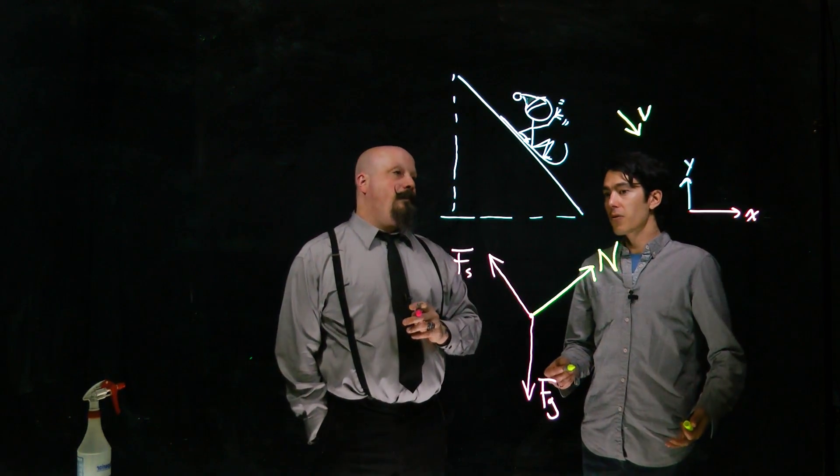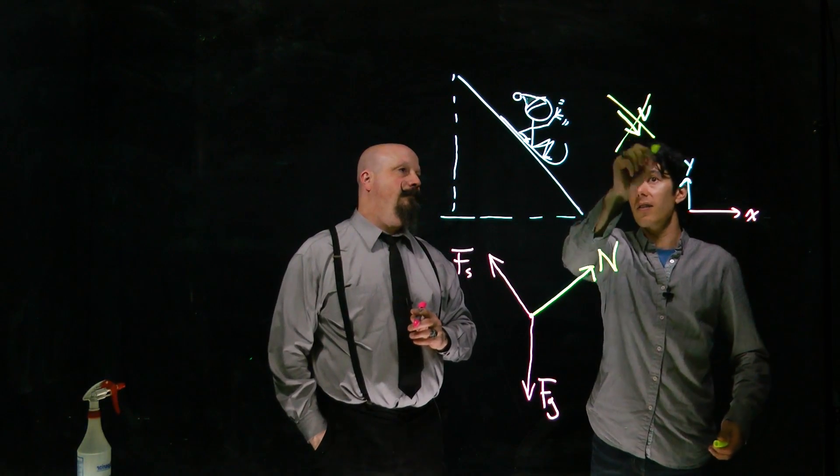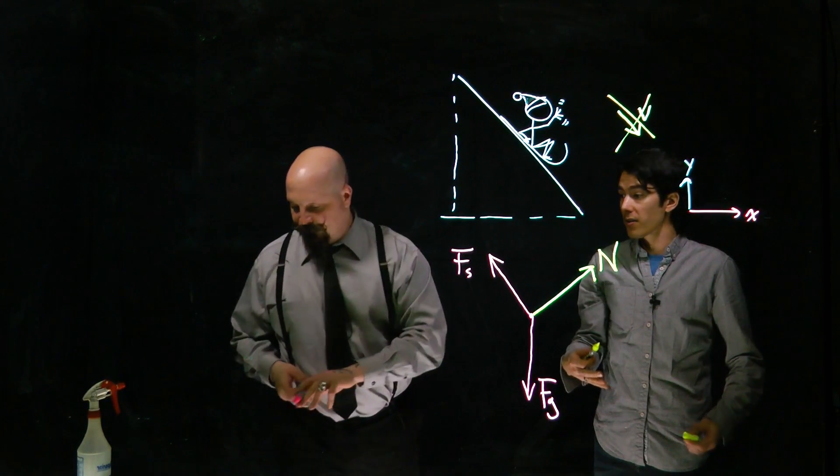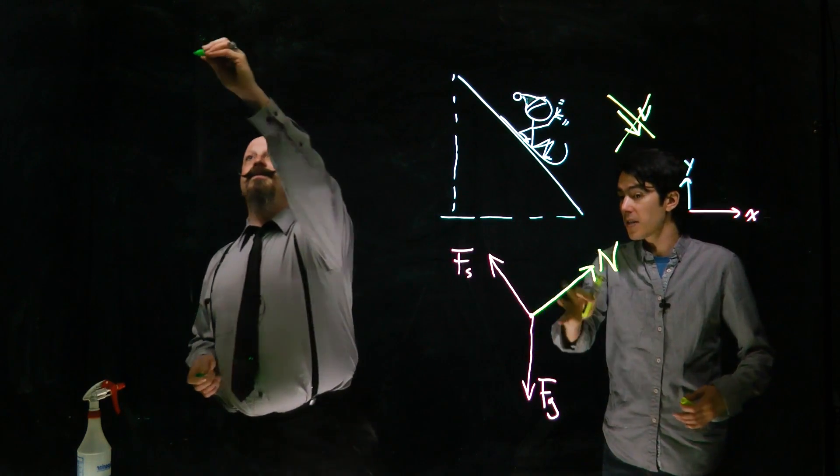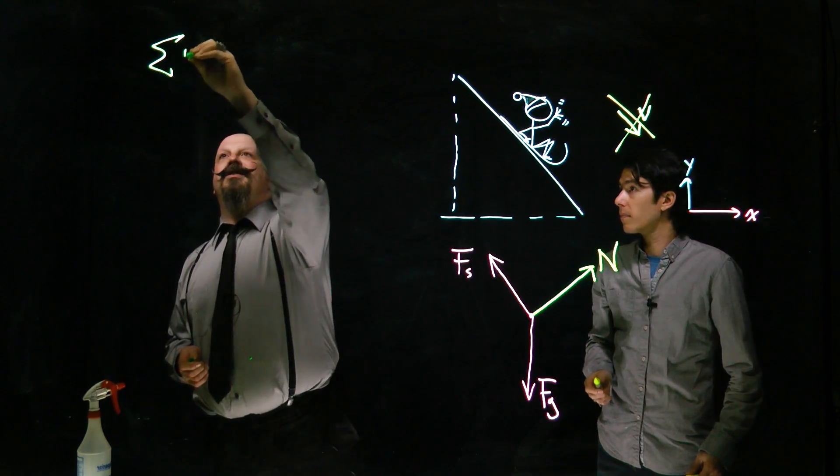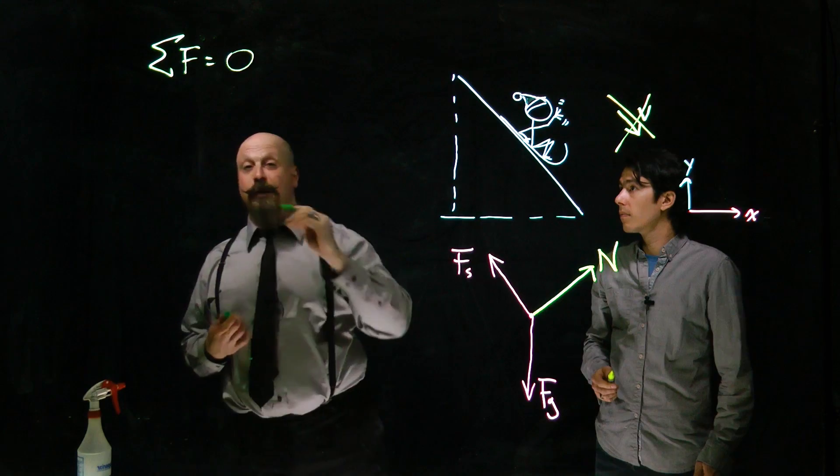Because there's no motion, there's no velocity, there's no acceleration. So according to Newton's laws, if there's zero acceleration, the net force has to be zero. These three forces need to cancel out, so we can say that the sum of forces acting in our system is equal to zero.